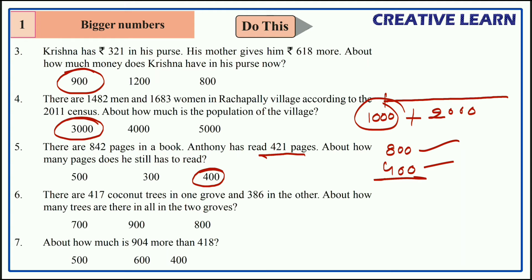Next question: there are 417 coconut trees in one grove and 386 in another. The question is: about how many trees are there in all in the two groves? We have to identify the total number of coconut trees from the two groves.